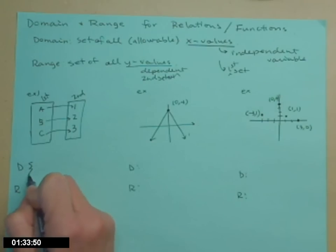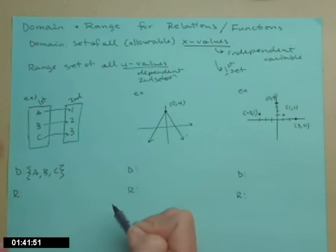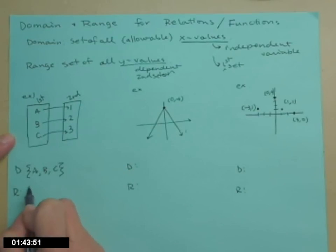And the second set tells me where everything gets mapped. So the domain, everything in the first set: a, b, c. I use the curly-cube brackets because it's a set. The range is everything in the second set. So 1, 2, 3.